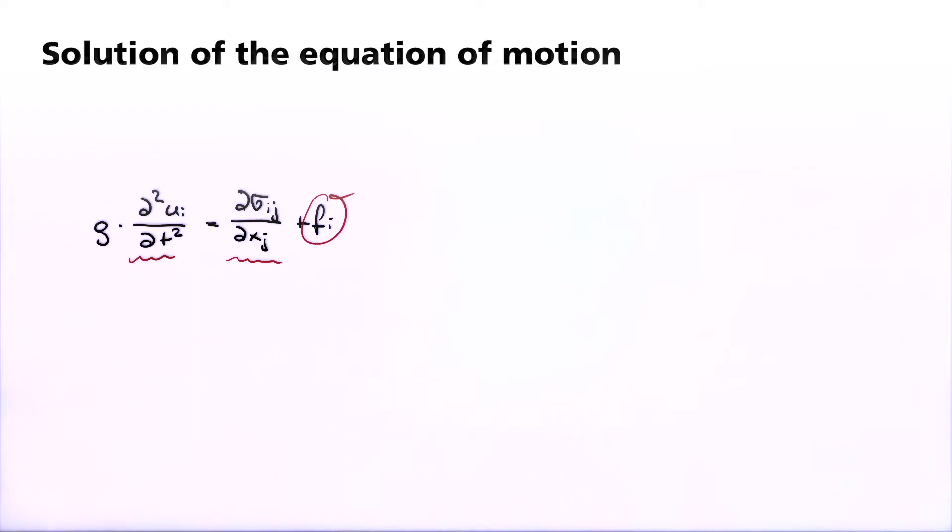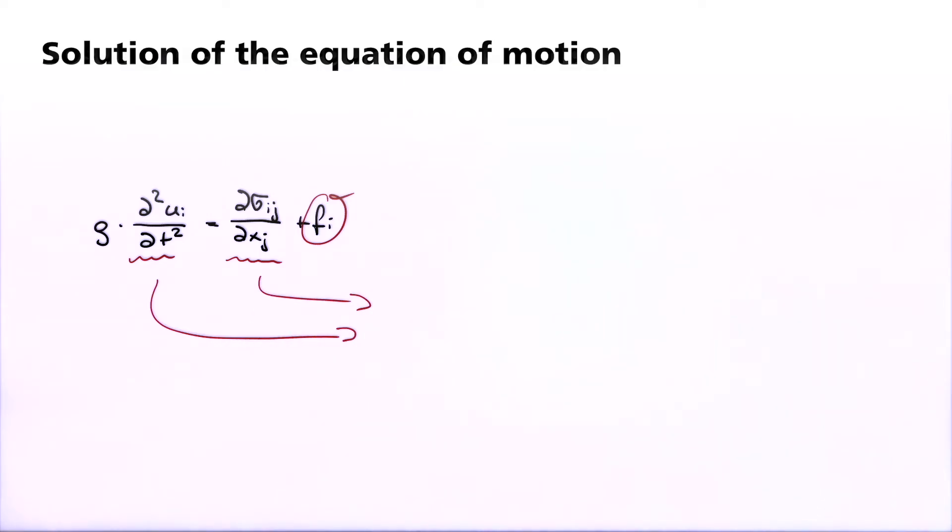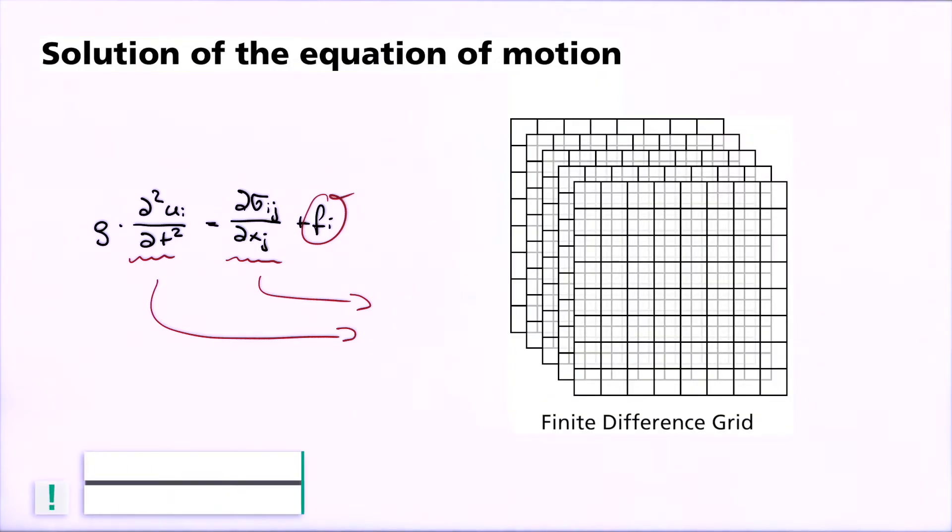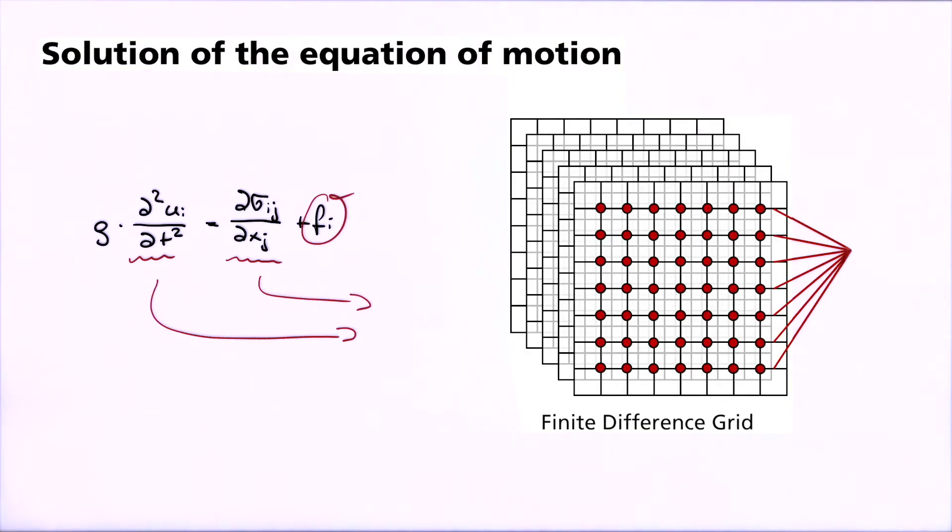And indeed, at many locations in the subsurface and at many points in time. This can only be done numerically with the help of high-performance computer processing. One way to implement this task is to use the finite difference method. In order to calculate the wave field in the subsurface, the subsurface is divided into an equidistant grid. The finite difference method approximates the derivatives of the equation of motion using differential quotients at the equidistant grid points. Both the spatial and temporal derivatives are then calculated in equidistant time steps. This is now, so to speak, the framework upon which the calculations are based.